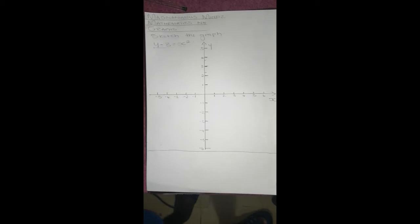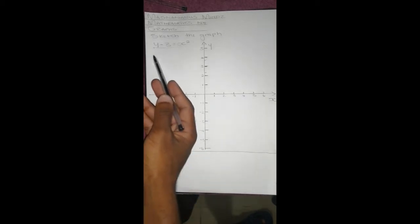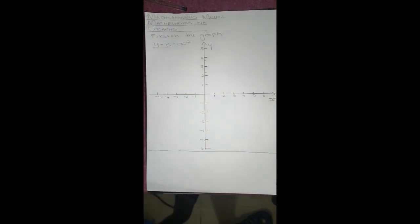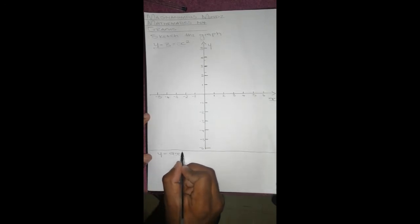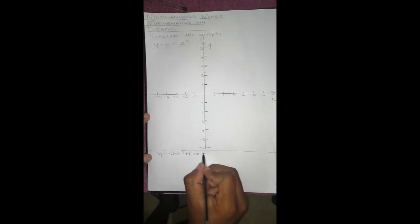I'm sure by now you know that when you're given an equation, you have to put it in standard form. Having an equation where it has x squared, we know that this graph is a parabola because of this x squared. The standard formula for a parabola is y equals ax squared plus bx plus c.